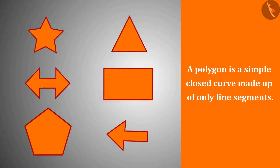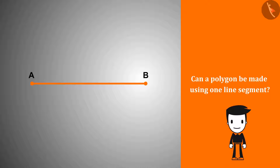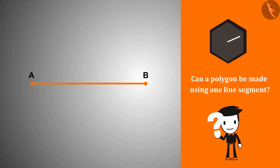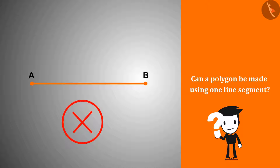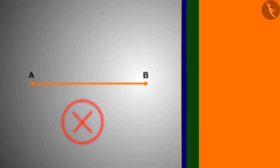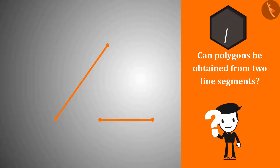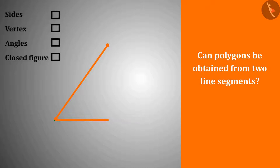These are all polygons. A polygon cannot be made from one line segment, because a figure needs multiple sides to be a polygon. With two line segments, we get two sides, one vertex and one angle, but this shape is not closed, so it is not a polygon.